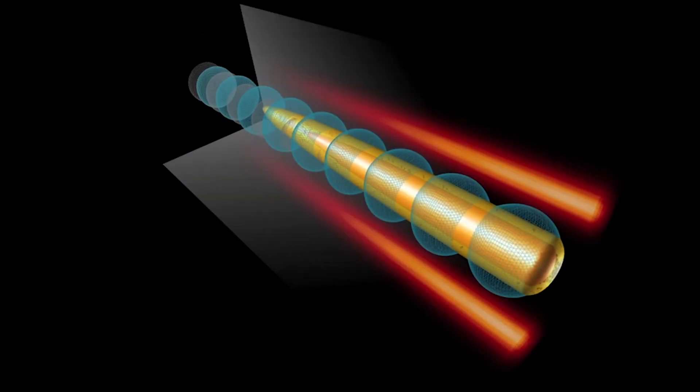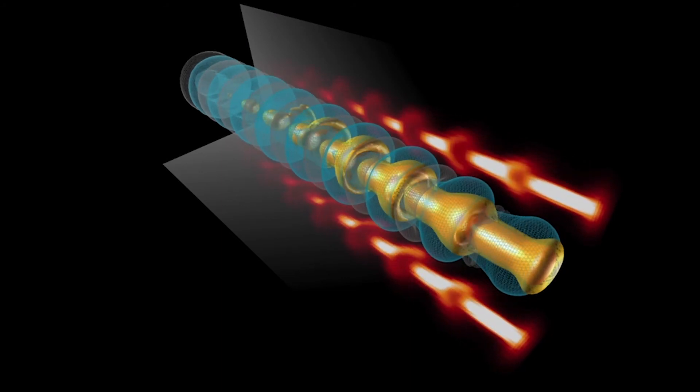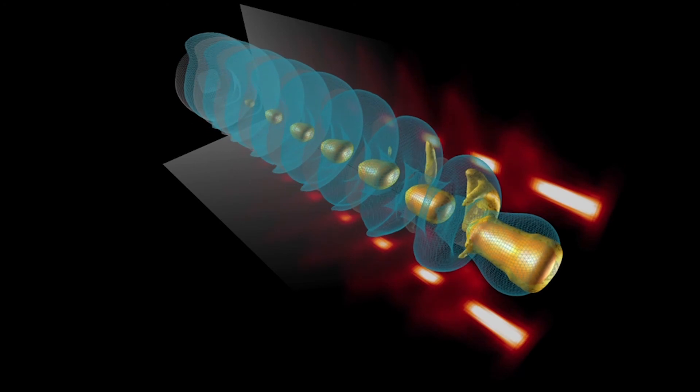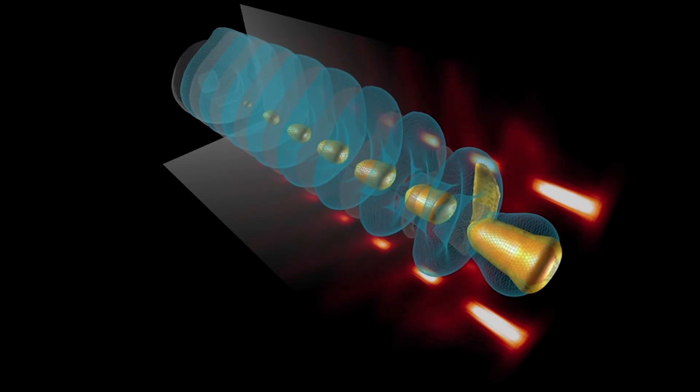Here you can see a computer simulation of the process. The yellow part in the center is the proton beam, and the blue and grey clouds are the plasma wake, which grows in amplitude behind the beam.